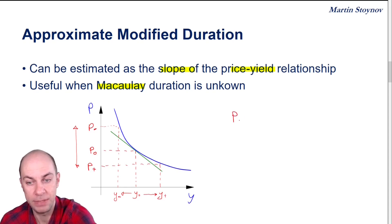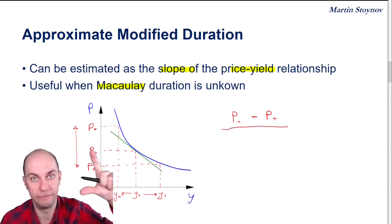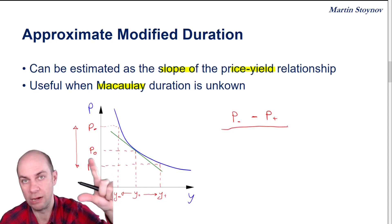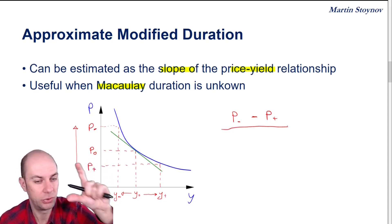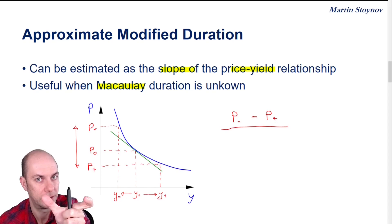So here I could say P- take away P+. So that's going to take the entire vertical distance for the calculation of the slope. Remember, to calculate a slope, you need rise over run.